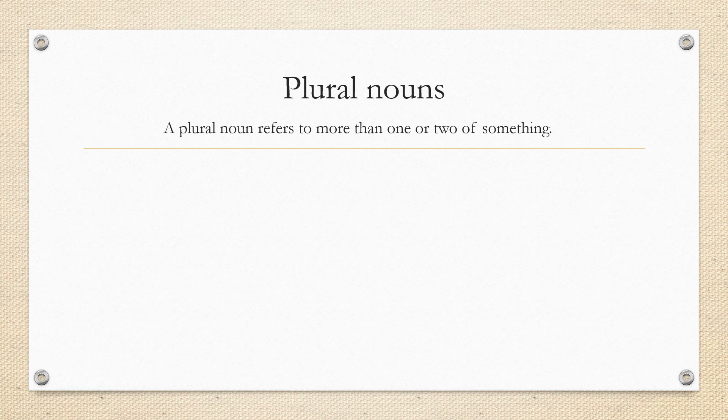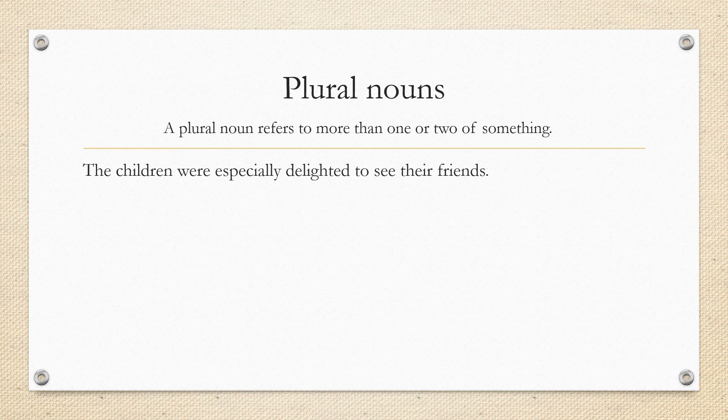A plural noun refers to more than one or two of something. Let's see if you can spot the plural nouns in these sentences. The children were especially delighted to see their friends. There are two plural nouns — can you see them? Children and friends.